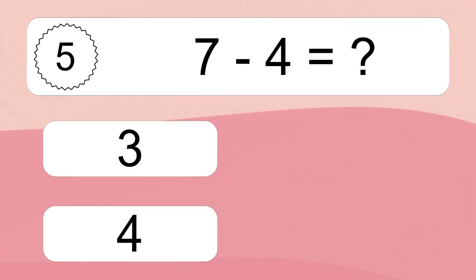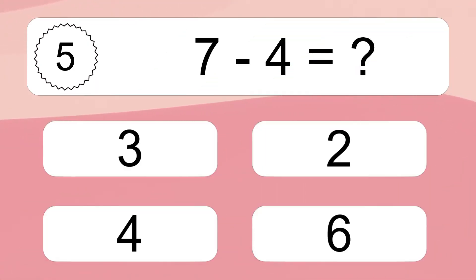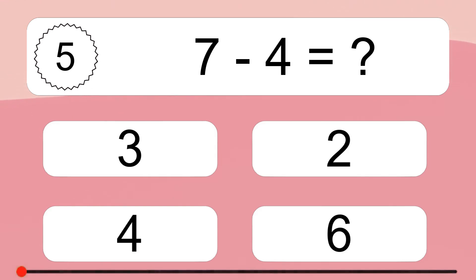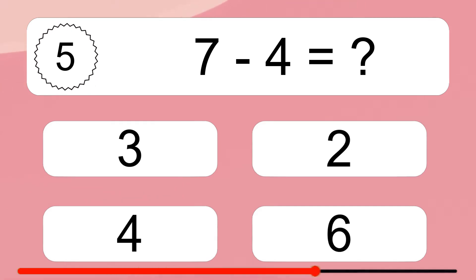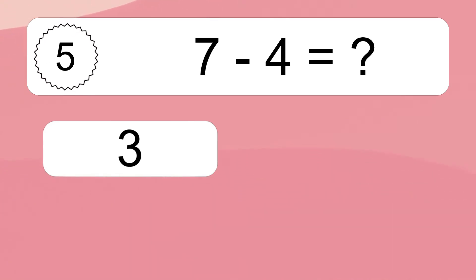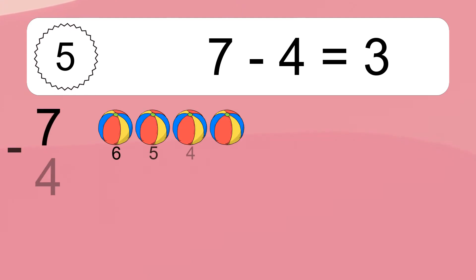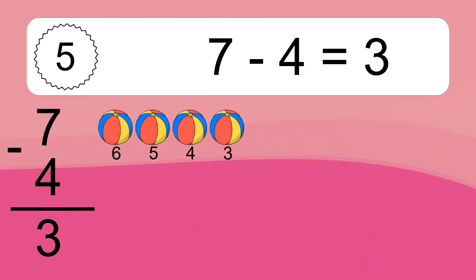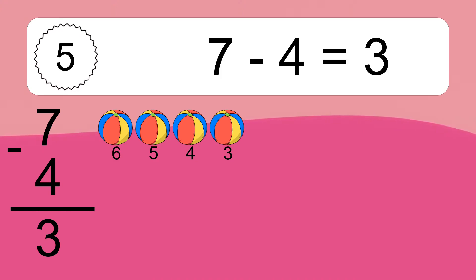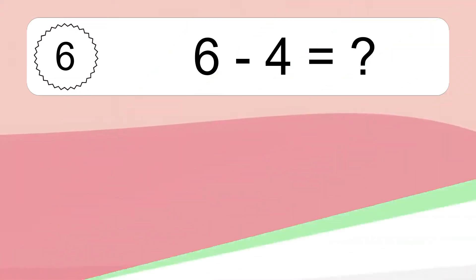7 minus 4 equals what? 7 minus 4 equals 3. Let's count it: 6, 5, 4, 3.